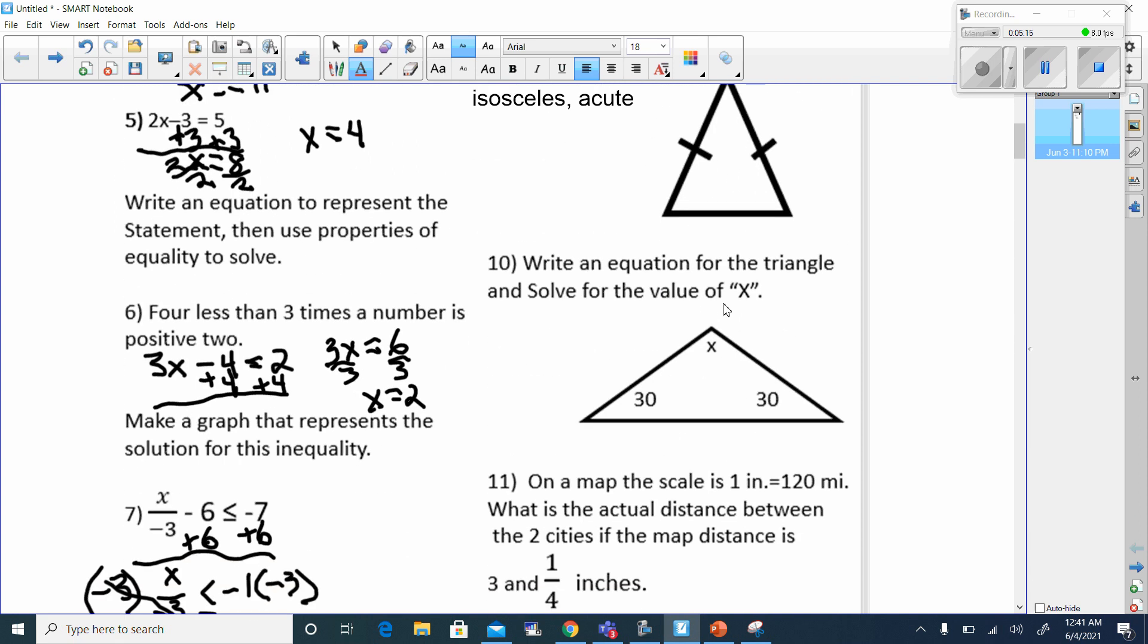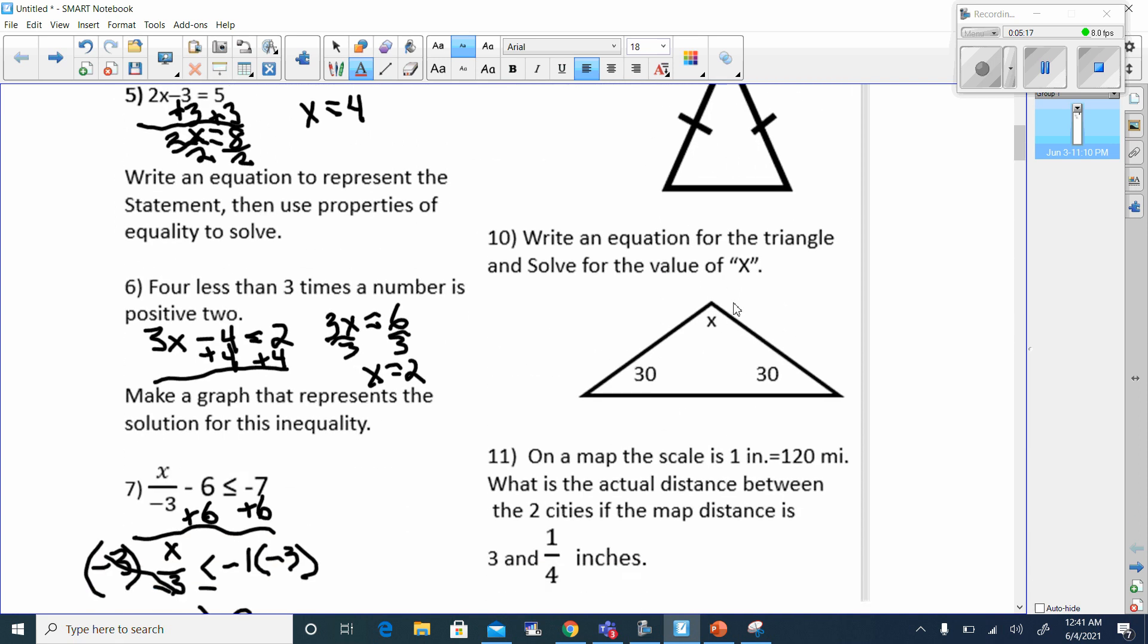Write an equation for a triangle and solve this. I know all triangles equal 180. This is 30 and 30 makes 60, and 180 minus 60, pretty easy. 180 minus 60 is going to leave me 120, so x has to equal 120.